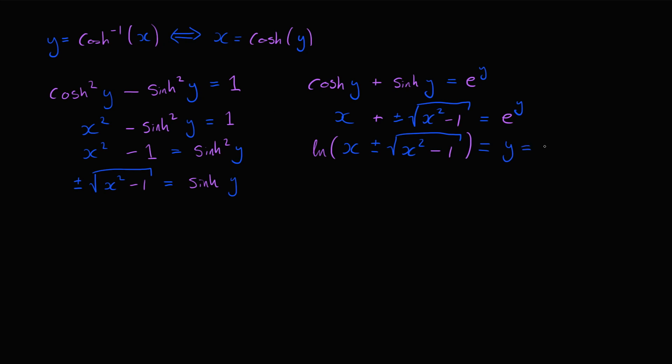But remember, y is just cosh inverse of x. So now, cosh inverse of x is natural log of x plus or minus the square root of x squared minus 1.